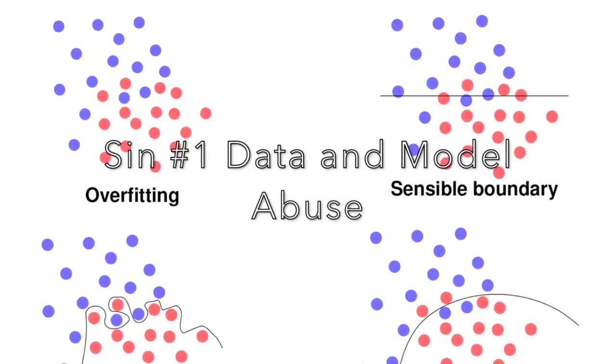Sin number one: data and model abuse. This sin is often committed by beginners in deep learning. In the most frequent occurrence, the experimental design is flawed. For example, the training data is used as test data. With simple classifiers such as the nearest neighbor, this immediately leads to a 100% recognition rate for most problems. In more sophisticated and deep models, it may not be 100% but 98 to 99% accuracy. Hence, you should always scrutinize your experimental setup if you achieve such high recognition rates in your first shot. If you go to new data, however, your model will completely break.